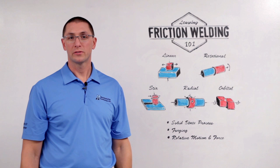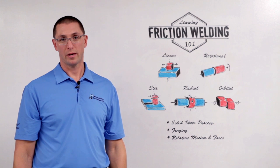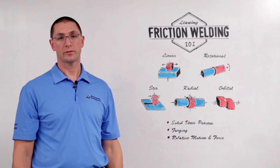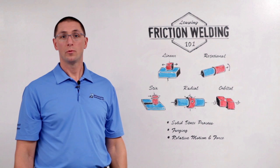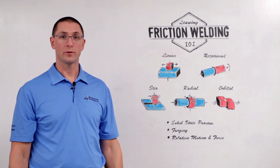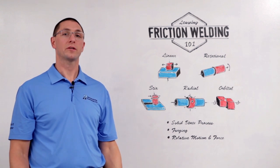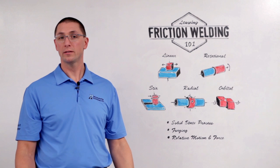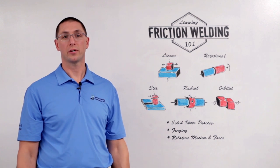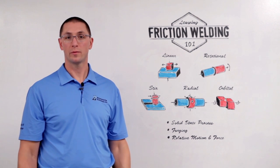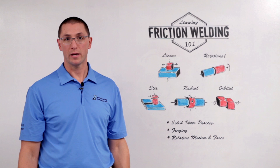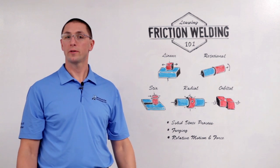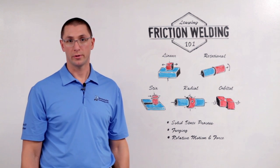Friction welding is a solid-state joining process. It's not actually a welding process — it's a forging process. We use relative motion and high force in order to create frictional heat at the weld interface. This in turn heats the materials you're trying to join up to the point where they will plasticize. You get intermixing at the weld interface and you end up with a forged quality joint.